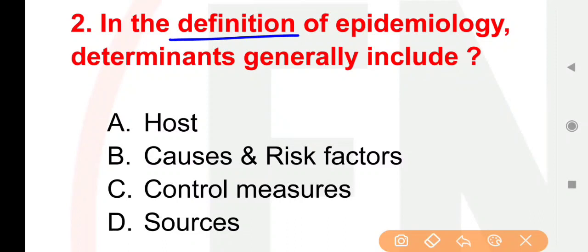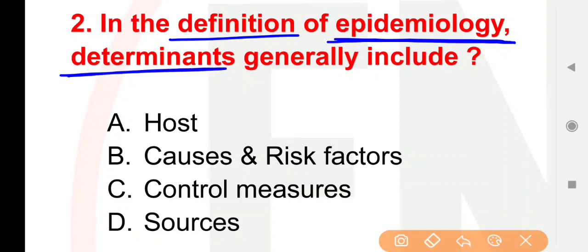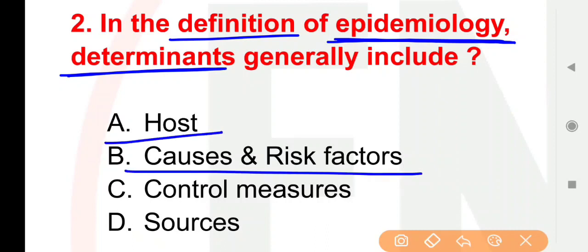Next question: In the definition of epidemiology, determinants generally include — epidemiology ki definition ke anusaar, determinants ke roop mein kise include kiya jata hai? Options: Host; Causes and risk factors; Control measures; Source.